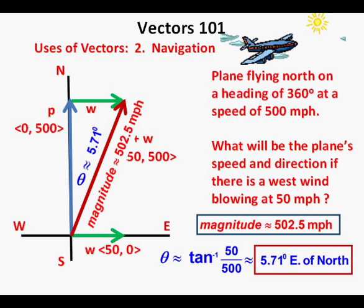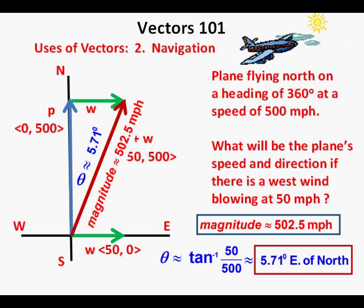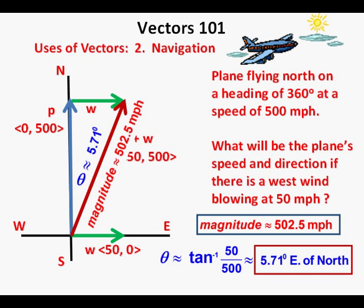The reason we could use the Pythagorean theorem was because the wind vector was horizontal. If that wind vector had not been horizontal, we would have had to do something else — perhaps use the law of cosines. We're going to tackle that situation in an upcoming lesson.